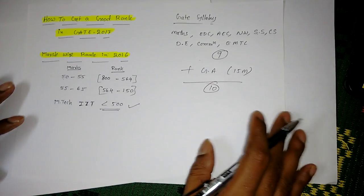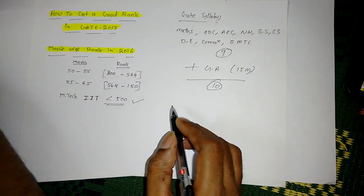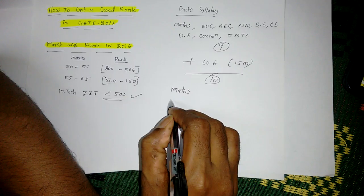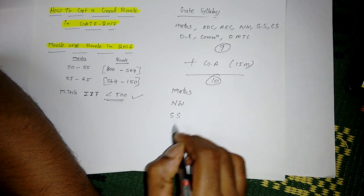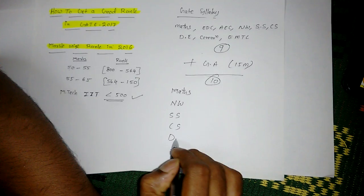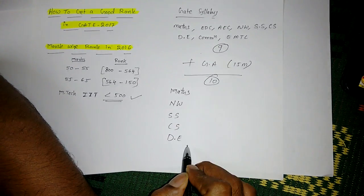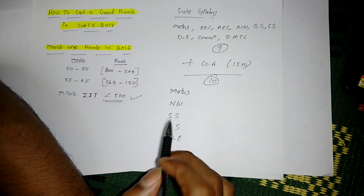Everyone is very familiar with all the numerical subjects. First I will take Mathematics, then Network Theory, Signals and Systems, Control Systems, Digital Electronics. These are the five subjects. If you concentrate on these five subjects, it is very easy to get the marks between 50 to 55.